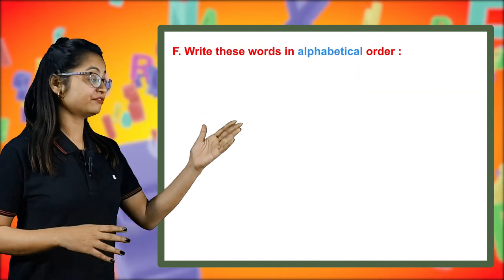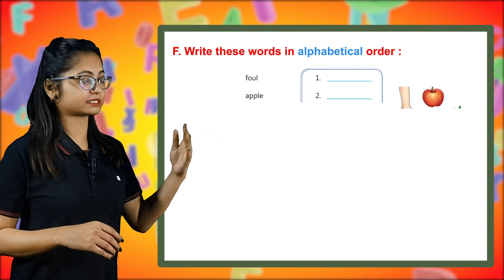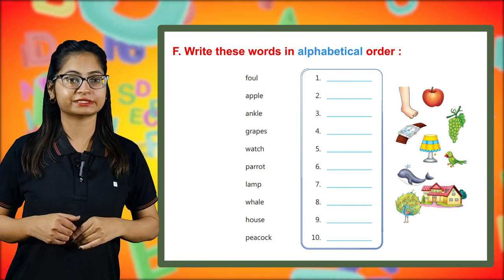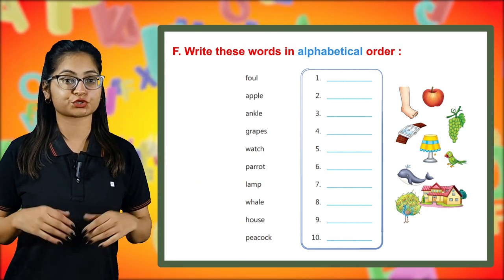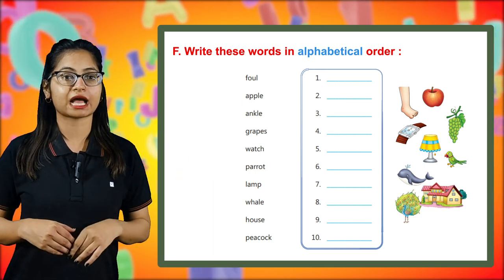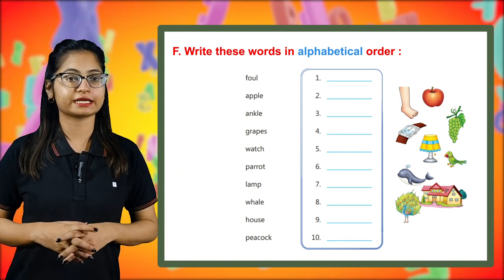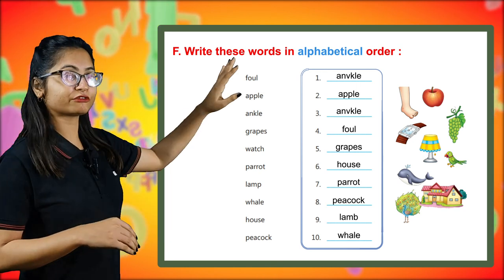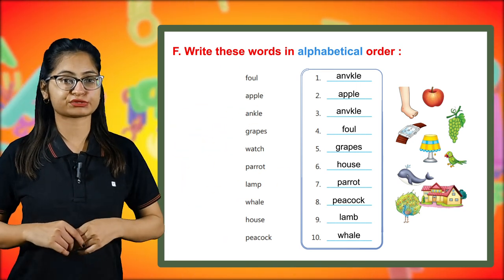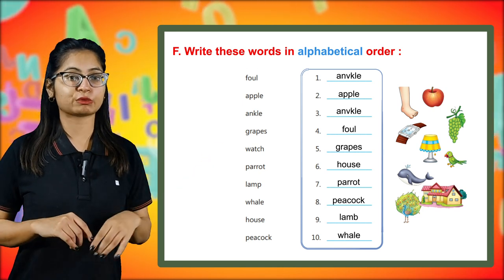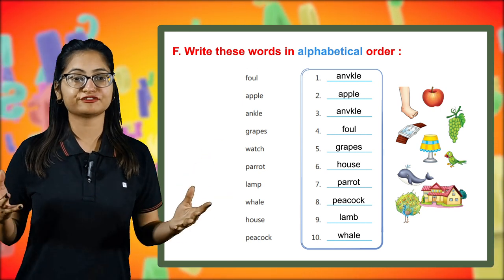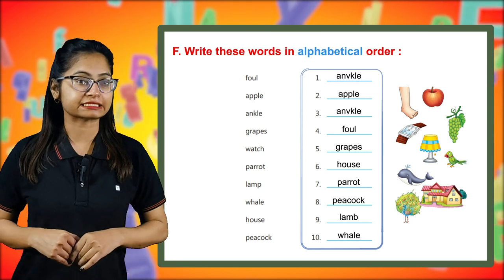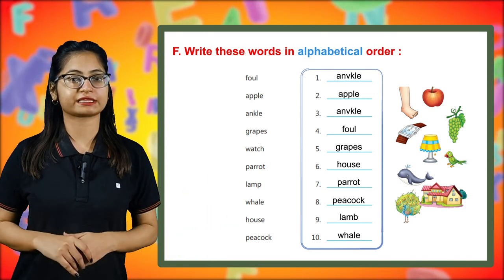Now let's move to Part F: write these words in alphabetical order. The words given include ankle, fowl, apple, grapes, watch, parrot, lamb, whale, house, and peacock. You can also take help from the pictures provided. The arranged answer is: ankle, apple, fowl, grapes, house, lamb, parrot, peacock, watch, and then whale.